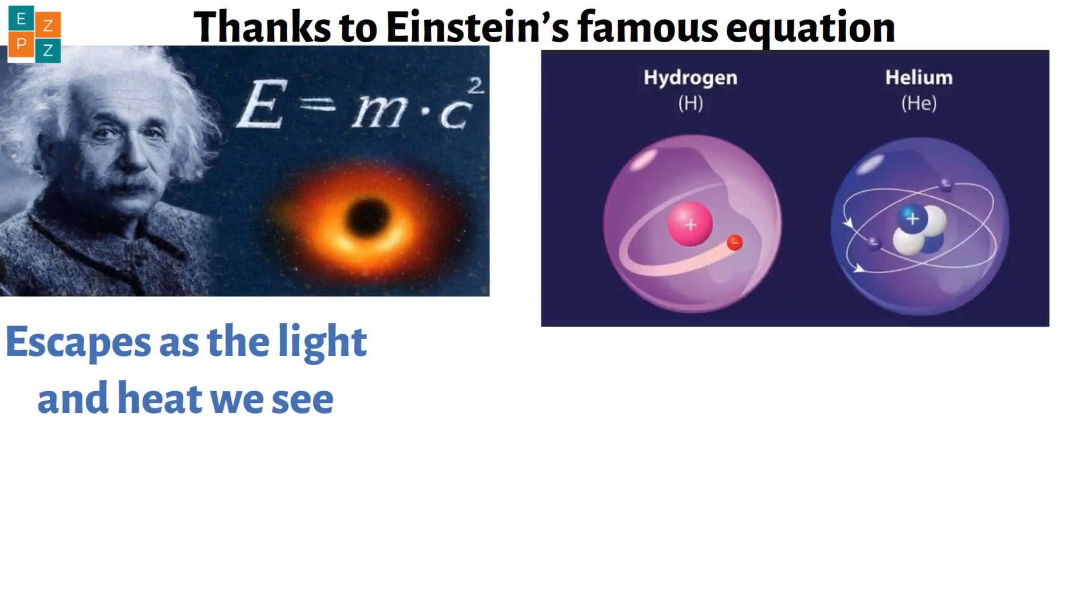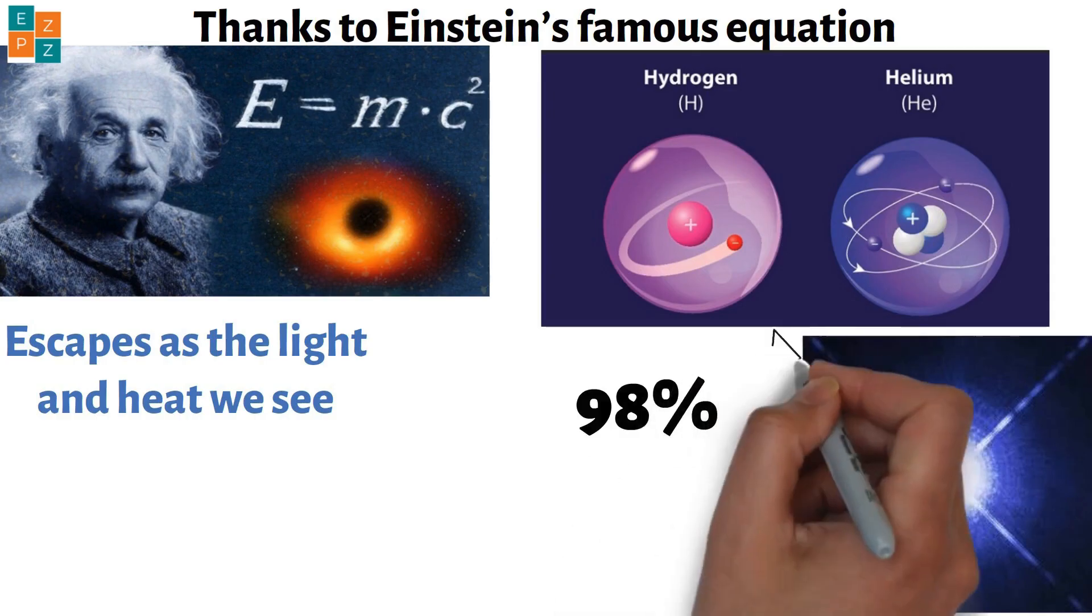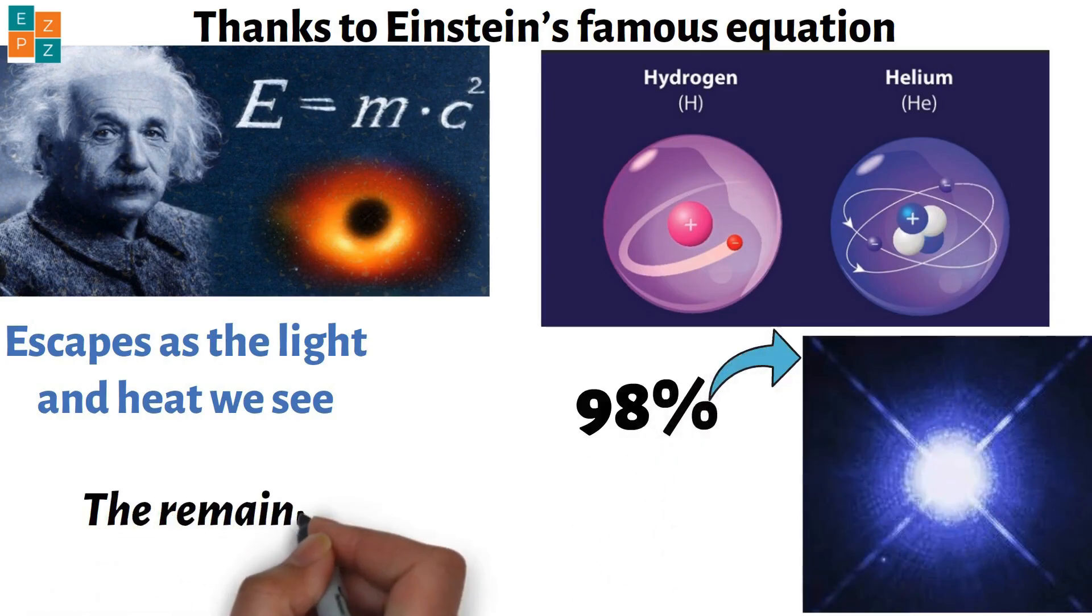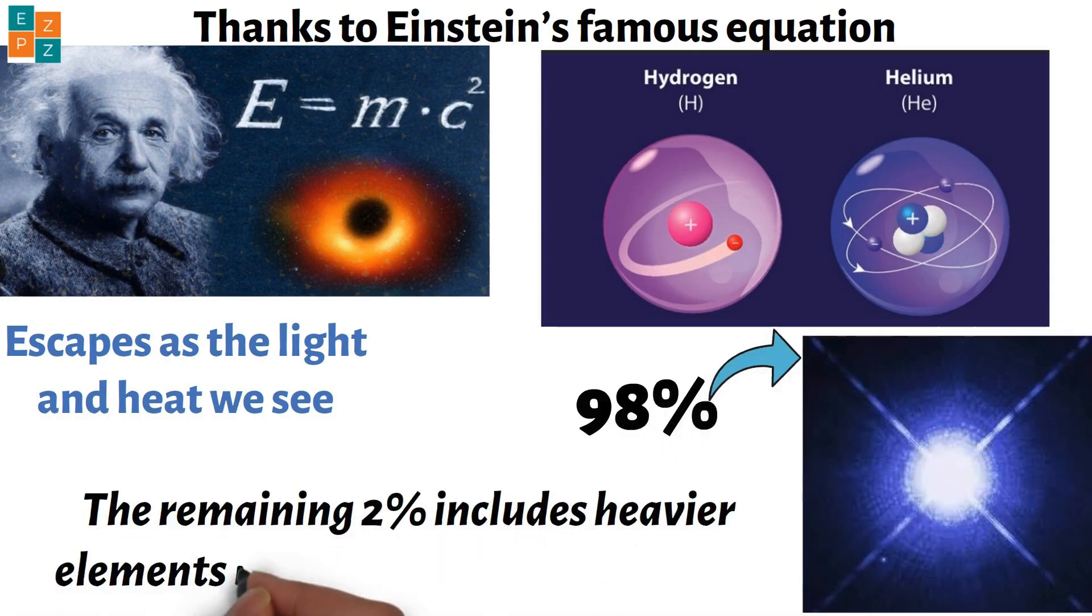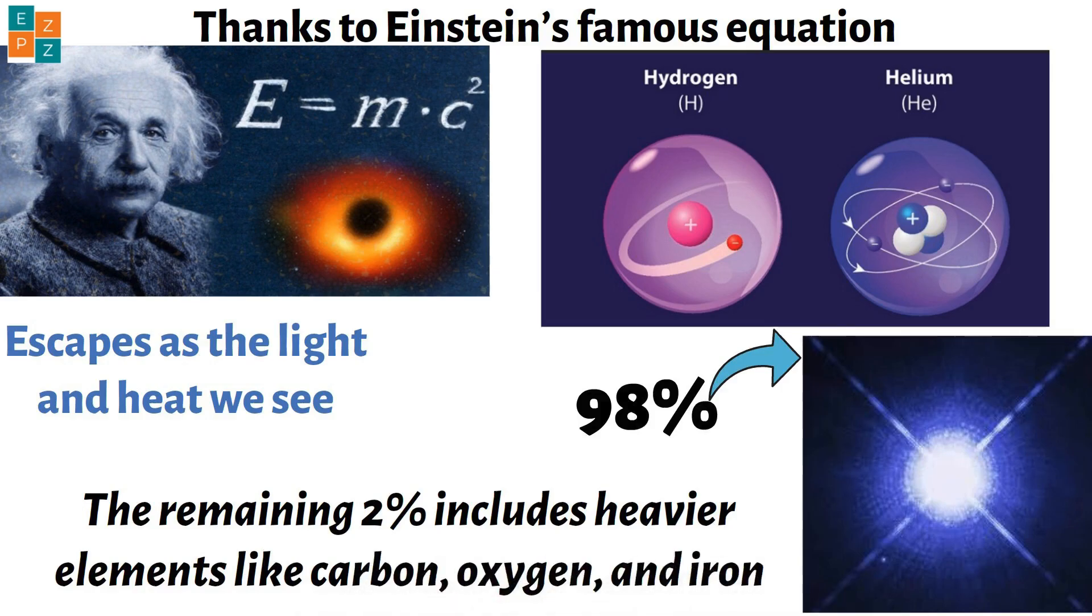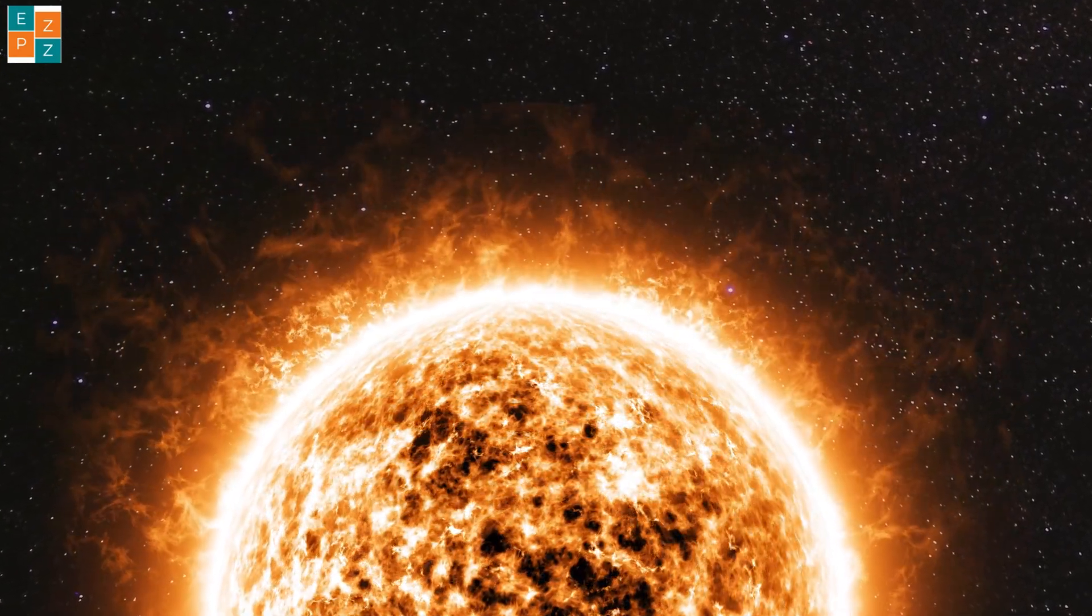While hydrogen and helium make up about 98% of a star's mass, the remaining 2% includes heavier elements like carbon, oxygen and iron, especially in older or dying stars.